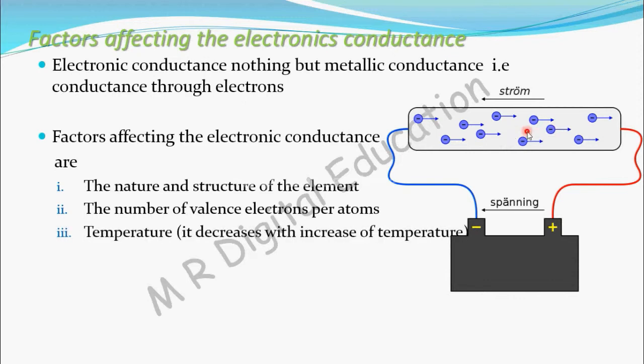Second factor: temperature. Conductivity for metals decreases with an increase in temperature. If you increase the temperature, conductivity for metals decreases because there will be a lot of collisions as temperature increases. So conductivity decreases for metals as temperature increases.